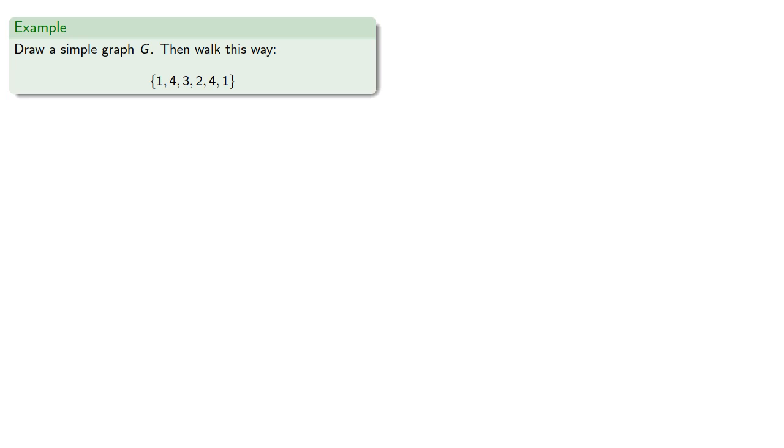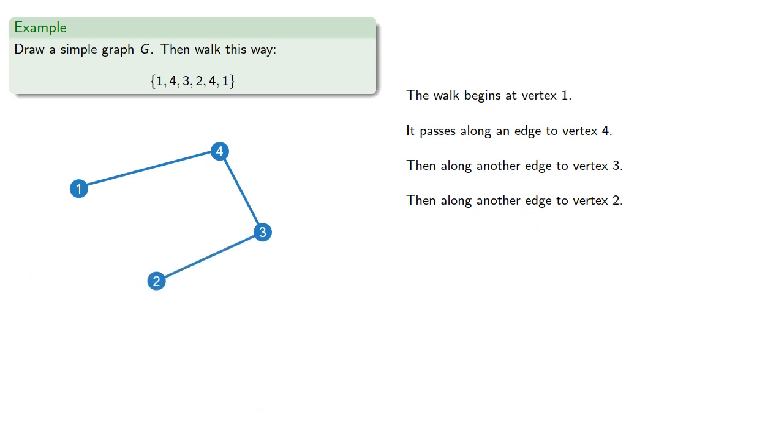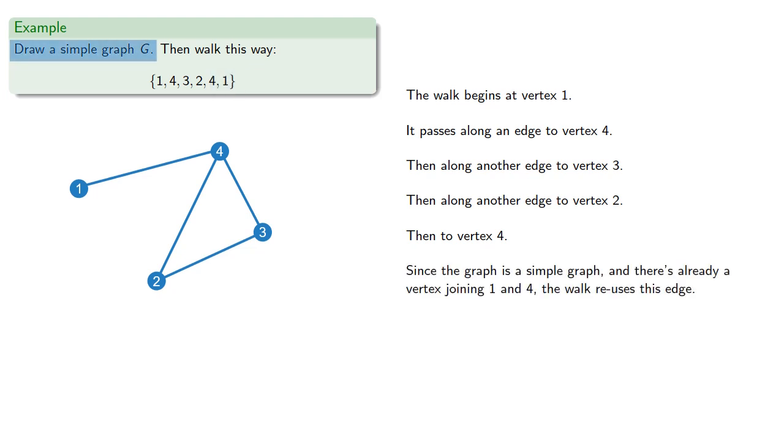Let's use our walk to define our graph. The walk begins at vertex 1, it passes along an edge to vertex 4, then along another edge to vertex 2, then to vertex 4, and we want to get back to vertex 1. Since the graph is a simple graph and there's already an edge joining 1 and 4, the walk reuses this edge.